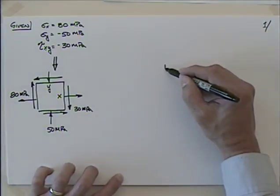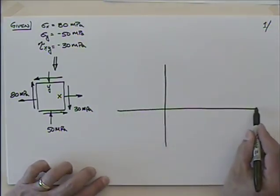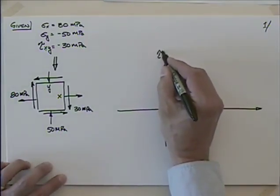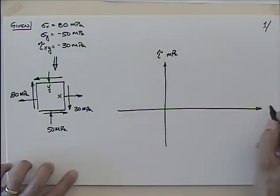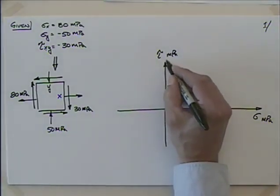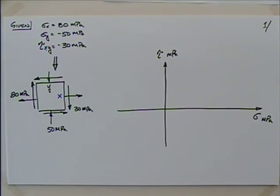We're going to start with our axes. We have the shear axis tau in megapascals, and we have the normal stress sigma, also in megapascals. If you do it like your author does, positive tau will point down and you rotate different directions. I caution you: either follow your author's instructions completely or follow mine completely — you don't want to mix those.